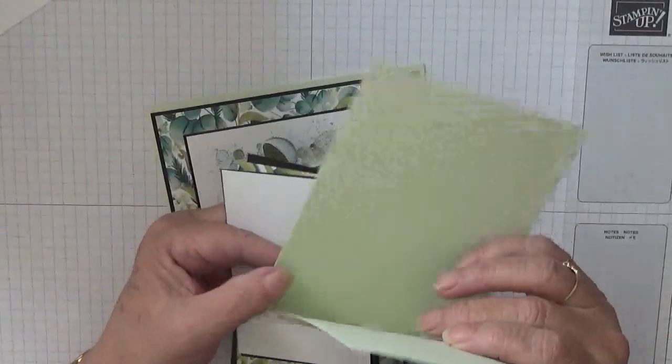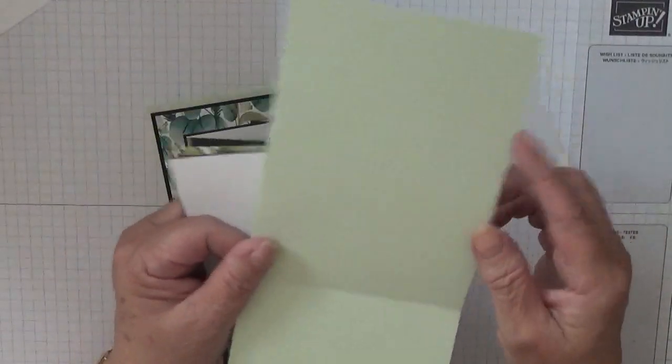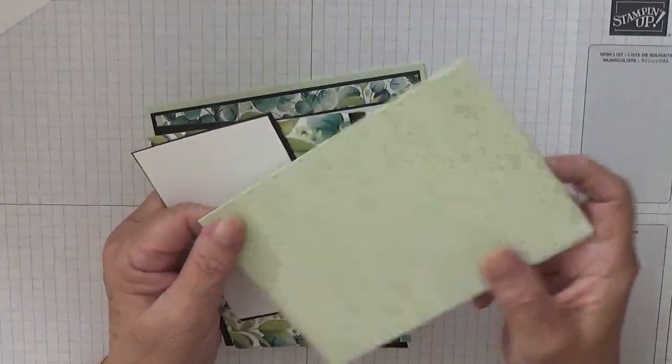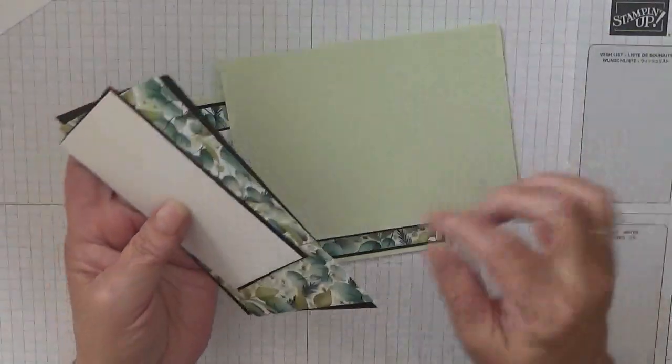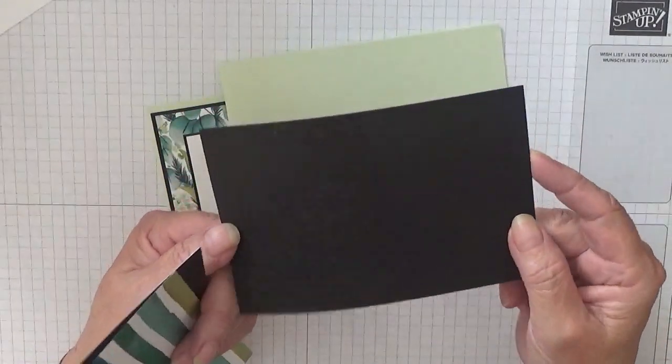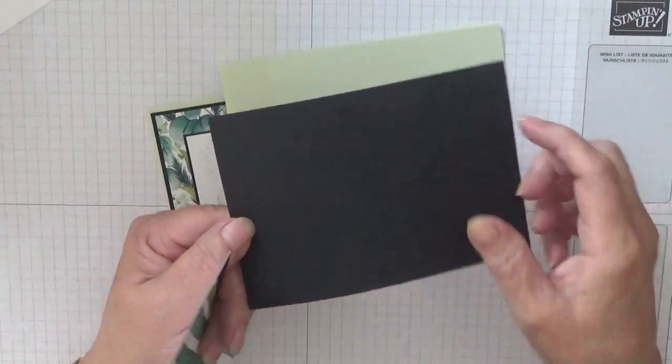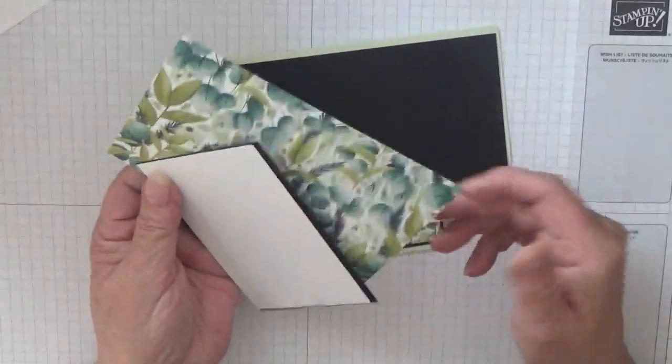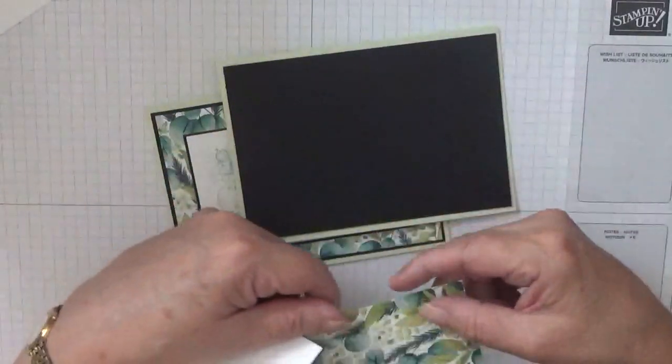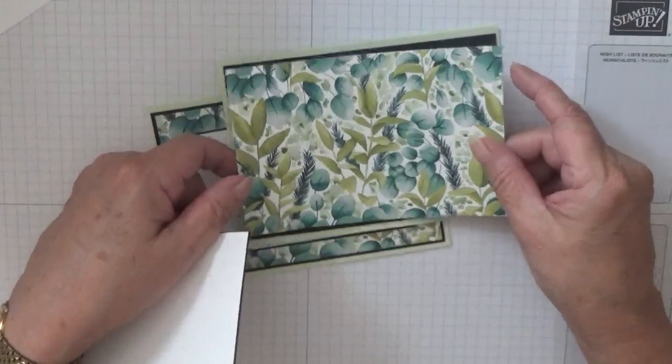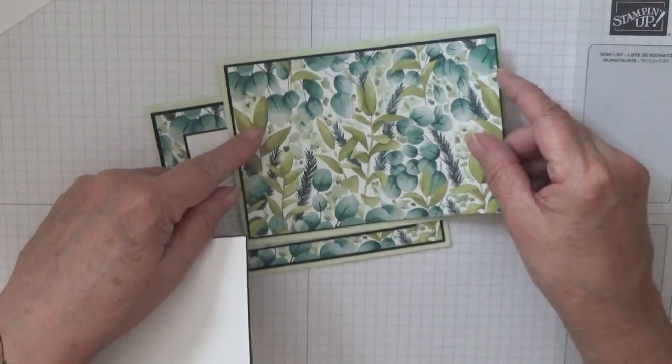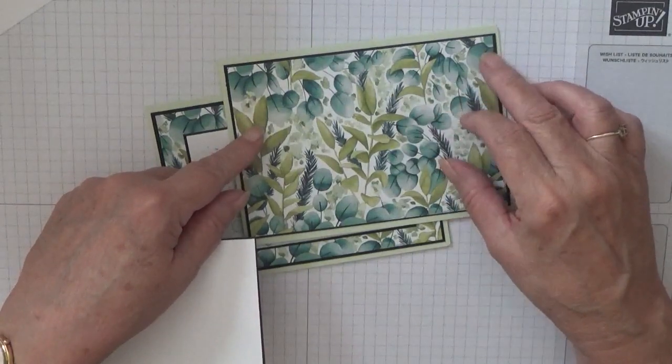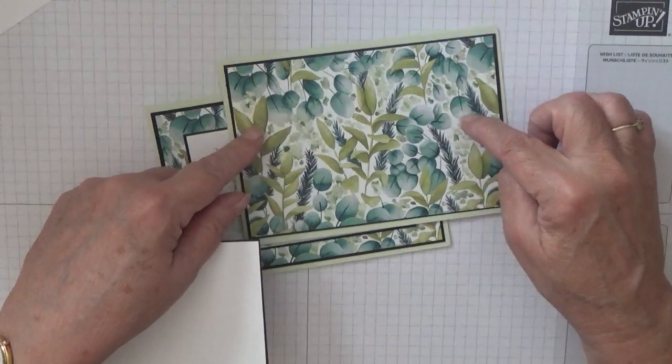The cardstock I'm using: I have a soft seafoam card base of 11 and 3/4 by 4 and 1/8 inches, scored at 5 and 7/8, folded in half and burnished. I have a basic black piece at 5 and 5/8 by 3 and 7/8. I have a piece of DSP—this is Forever Greenery from the new catalog.